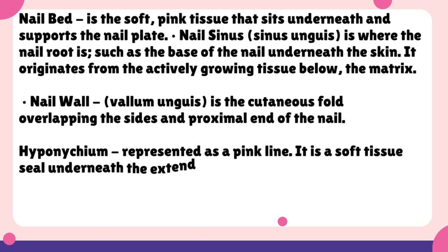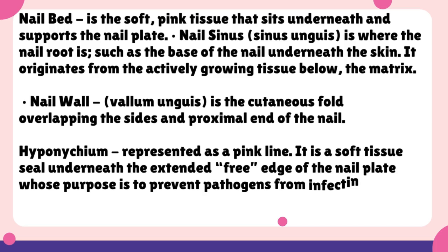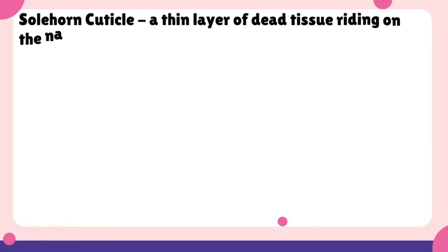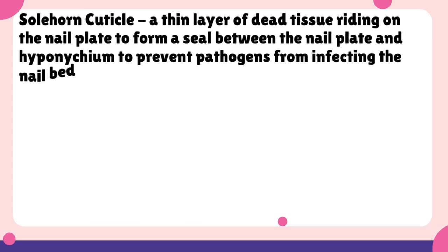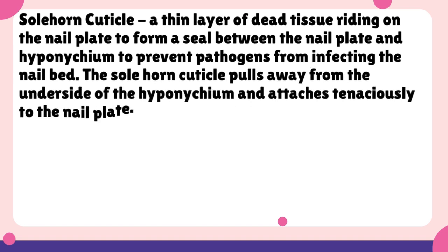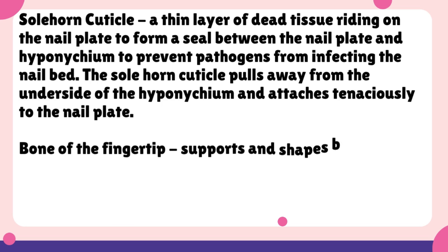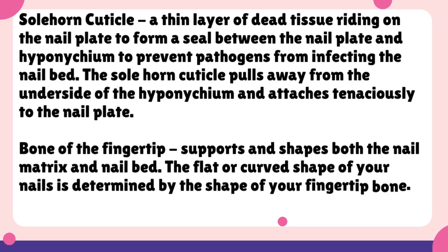Hyponychium, represented as a pink line, is a soft tissue seal underneath the extended free edge of the nail plate whose purpose is to prevent pathogens from infecting the nail bed. Sole horn cuticle is a thin layer of dead tissue riding on the nail plate to form a seal between the nail plate and hyponychium to prevent pathogens from infecting the nail bed. Bone of the fingertip supports and shapes both the nail matrix and nail bed. The flat or curved shape of your nails is determined by the shape of your fingertip bone.